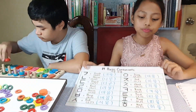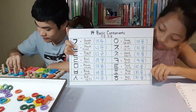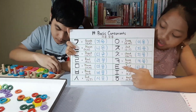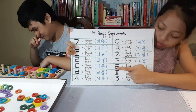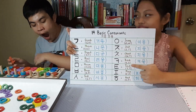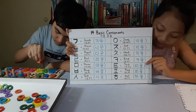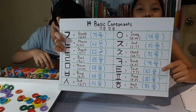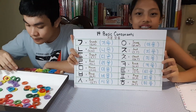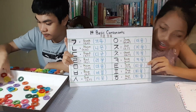Always remember that. After Ki-uk, we have the consonant Ti-ut. This is the Korean alphabet character. Ti-ut is the romanization, and this one is the Hangul name. The consonant Ti-ut is T sound in the beginning and T sound in the final, so both are still T sound.